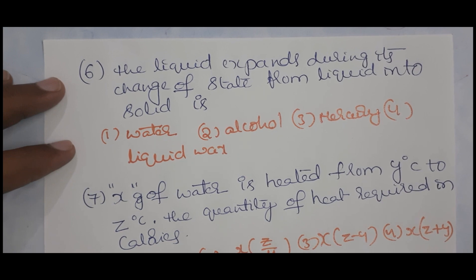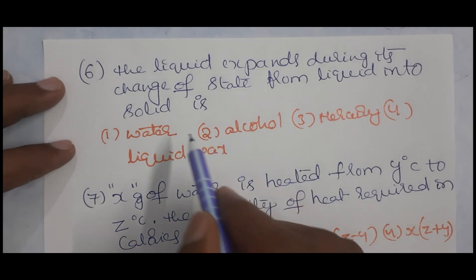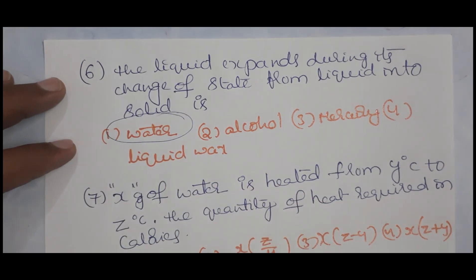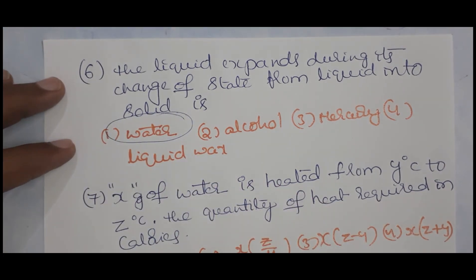The liquid that expands during its change of state from liquid to solid is water. When water freezes to ice, its volume increases. That is why ice has a lower density than water, and so ice floats on water.